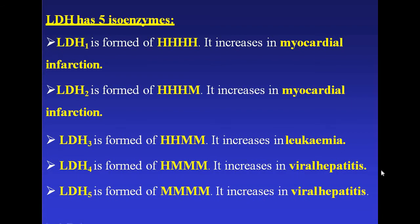There are five isoenzymes of LDH: LDH1, LDH2, LDH3, LDH4, and LDH5. LDH1 is formed of all four heart subunits and increases in myocardial infarction. LDH2 is formed of three heart subunits and one muscle subunit and increases in myocardial infarction. LDH3 is formed of two heart and two muscle subunits and increases in leukemia. LDH4 is formed of one heart and three muscle subunits and increases in viral hepatitis. LDH5 is formed of all four muscle subunits and increases in viral hepatitis.